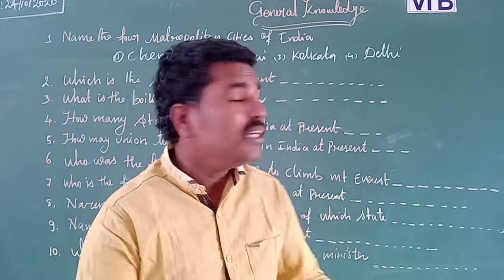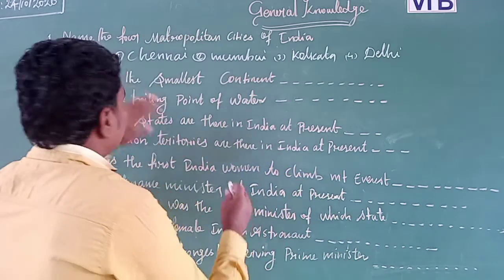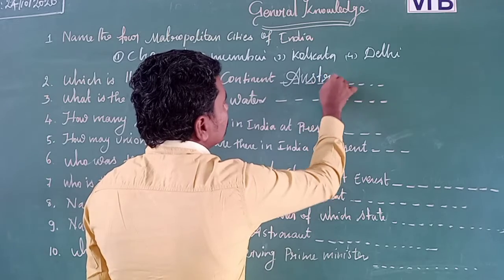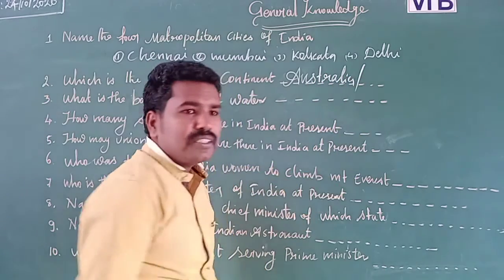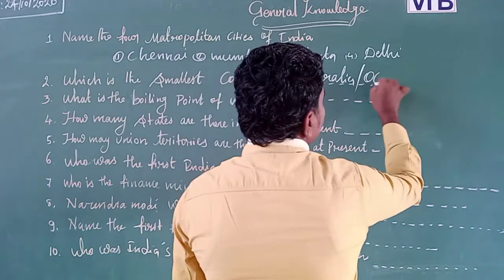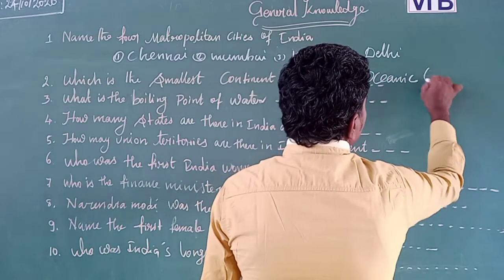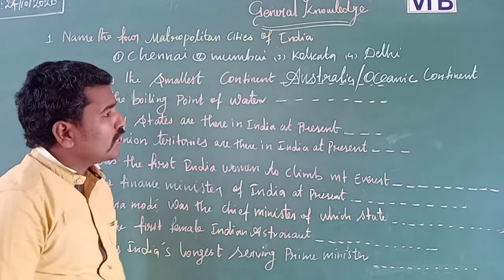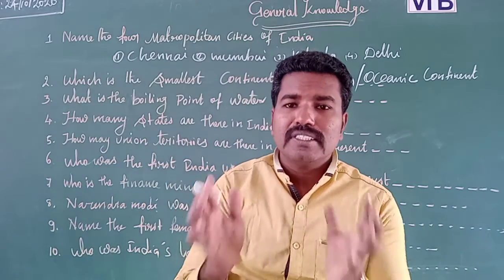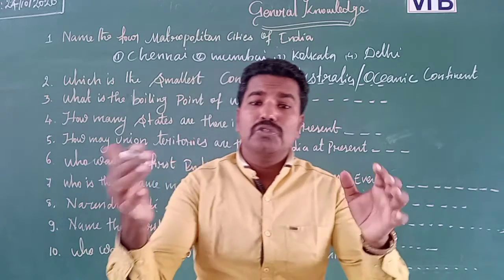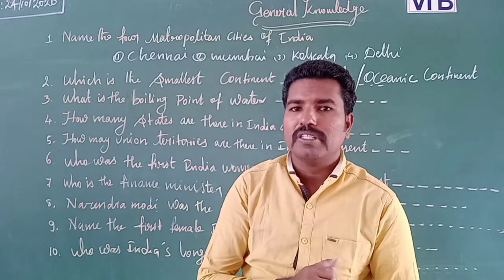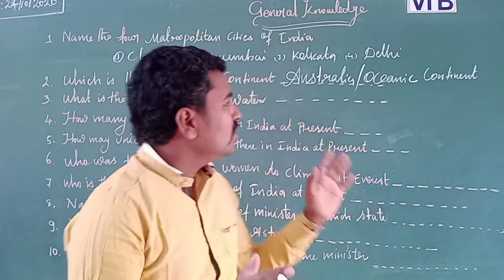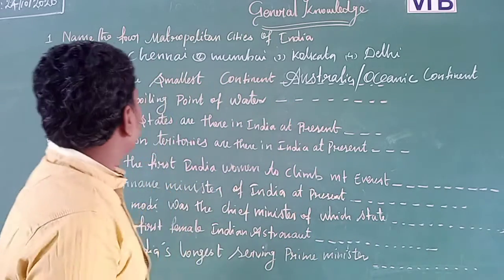So the smallest continent in the world is Australia. It is also called the Oceanic continent, because it is a very big island situated among the ocean. Tasmania, New Zealand, and the surrounding region are part of this Oceanic continent.